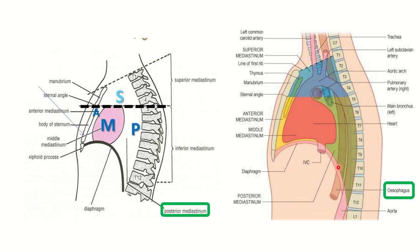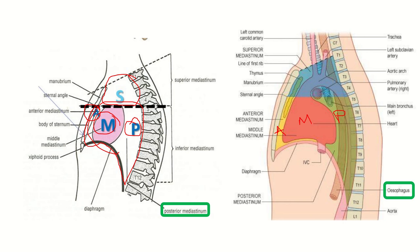We can see this area is the posterior mediastinum. The mediastinum is divided — the inferior mediastinum is divided into anterior, middle, and posterior. Here in this picture, this is the superior mediastinum and this is the inferior mediastinum. The inferior mediastinum is divided into anterior, middle, and posterior mediastinum according to position.